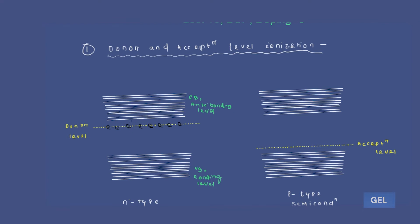At 300K, all electrons are available at the donor level at 0K. If you increase the temperature from 0K to 300K, the electrons start moving from the donor level to the conduction band. This is the first case: donor level electrons. If you increase the temperature from 0K to 300K, in the second case they start moving from donor level to the conduction band.